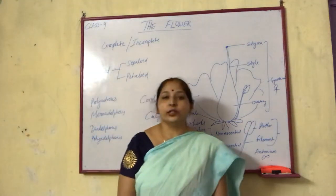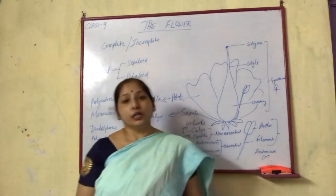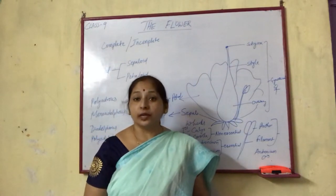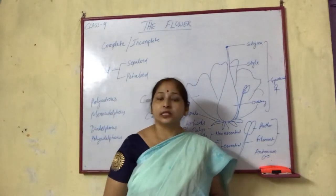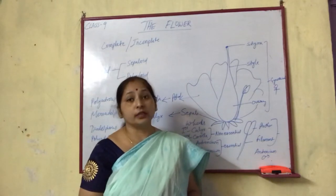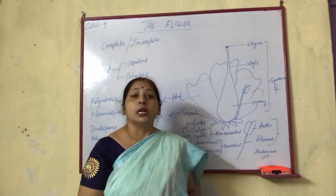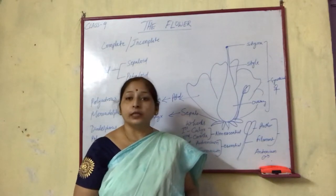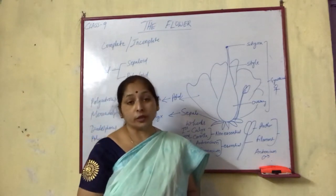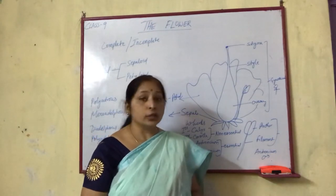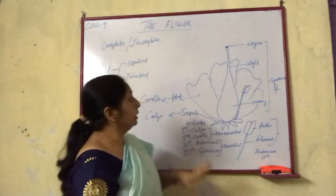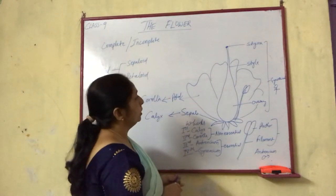Hello students, today we are going to start a new chapter — the flower. You all have seen flowers, but we'll discuss the floral details, the structure of the flower, and the main reproductive parts. The flower is the main reproductive organ of angiosperms, so let's start with the floral details.